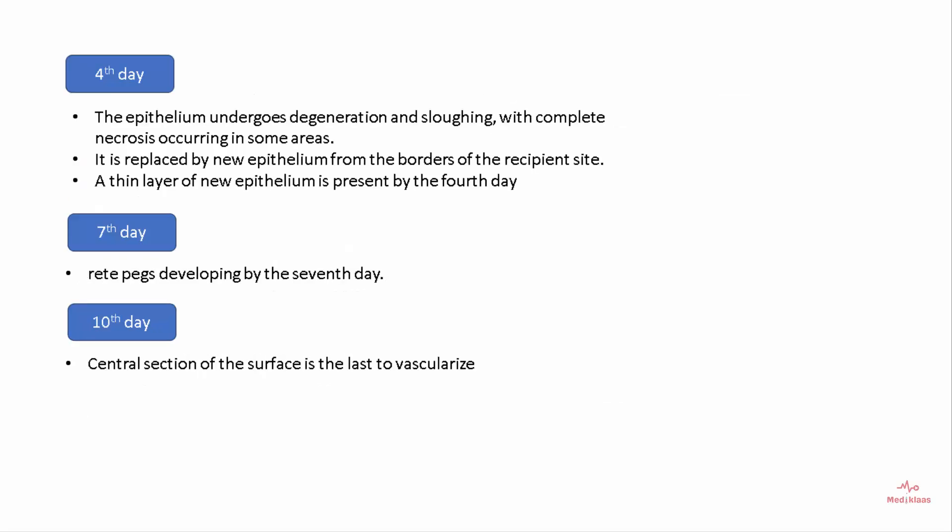Around the fourth day, the epithelium undergoes degeneration and sloughing, with complete necrosis occurring in some areas. This epithelium is replaced by new epithelium from the borders of the recipient site, and a thin layer of new epithelium is present by the fourth day. Around day seven, rete pegs develop, and around day ten, the central section of the surface is the last area to vascularize.